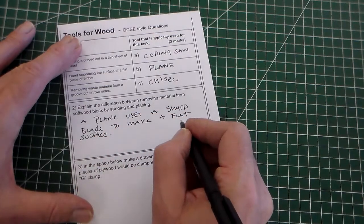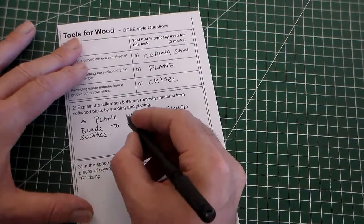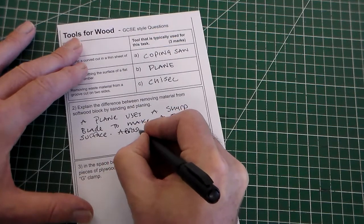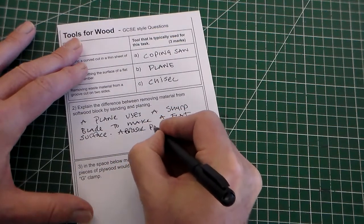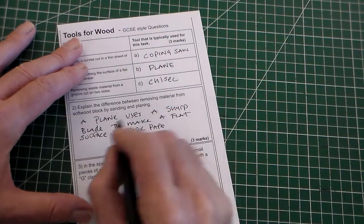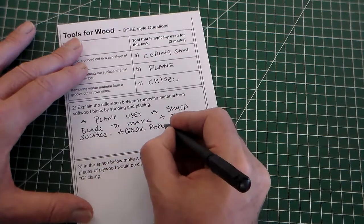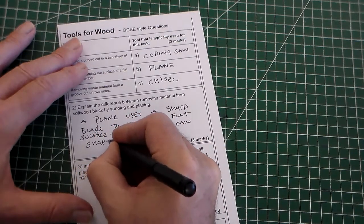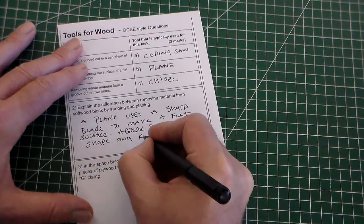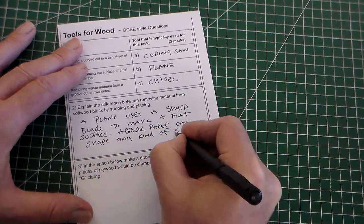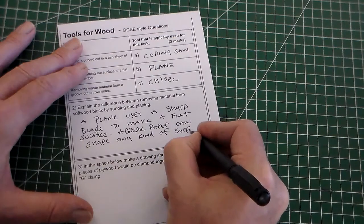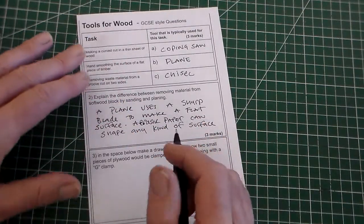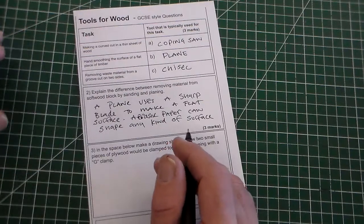So the plane makes a flat surface. And the abrasive paper can shape any surface, any kind of surface. So if you've got a curved surface or a dome surface you can use abrasive paper. That's two main differences.